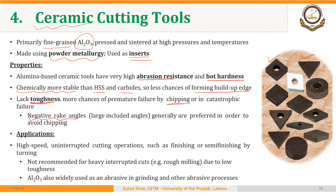These ceramic cutting tools are used for high-speed uninterrupted cutting, such as turning — turning being an example of uninterrupted cutting. We can achieve higher speeds compared to carbide and HSS tools. They are not recommended for heavy interrupted cuts, such as milling, due to their low toughness.